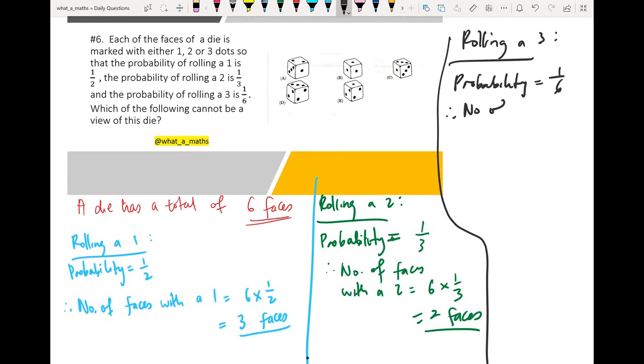Number of faces with a 3 is equal to 6 faces multiplied with the probability, 1 over 6, will give me 1 face.